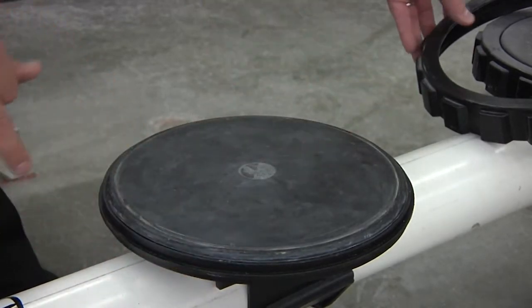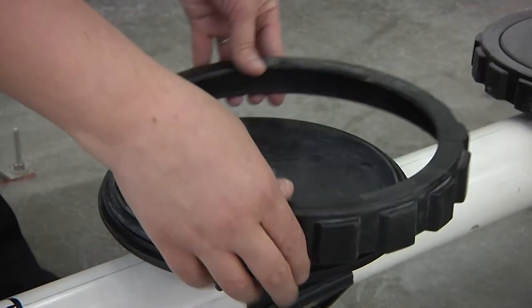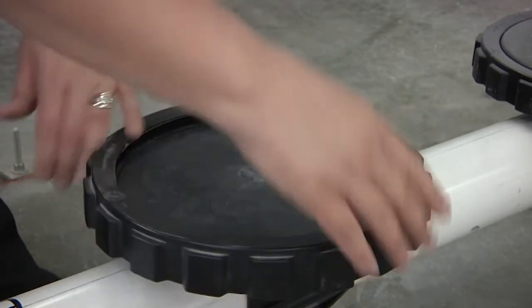You can use water or a soapy water solution to lubricate the membrane and allow a smoother tightening of the retainer ring.